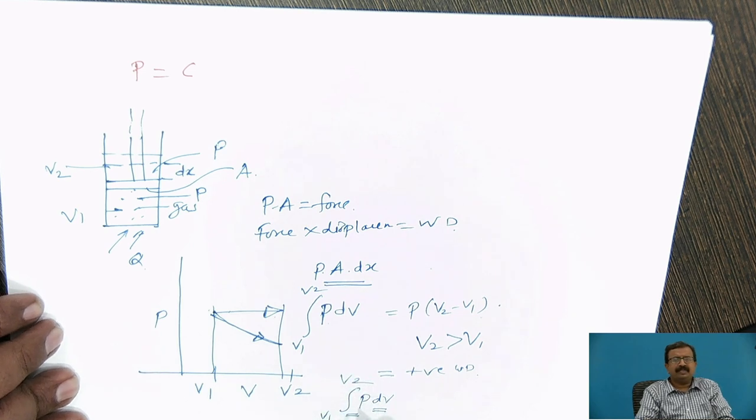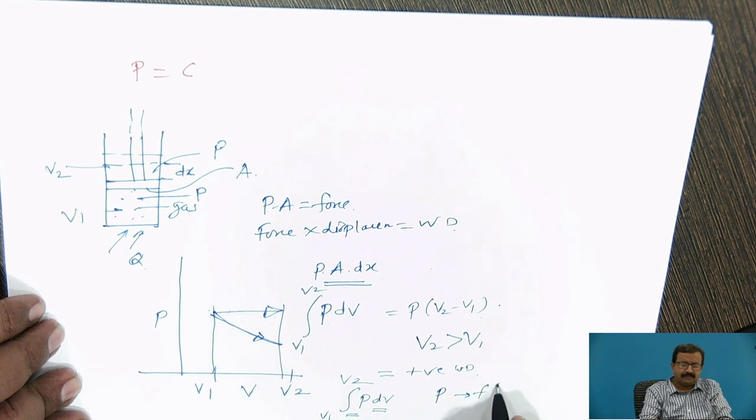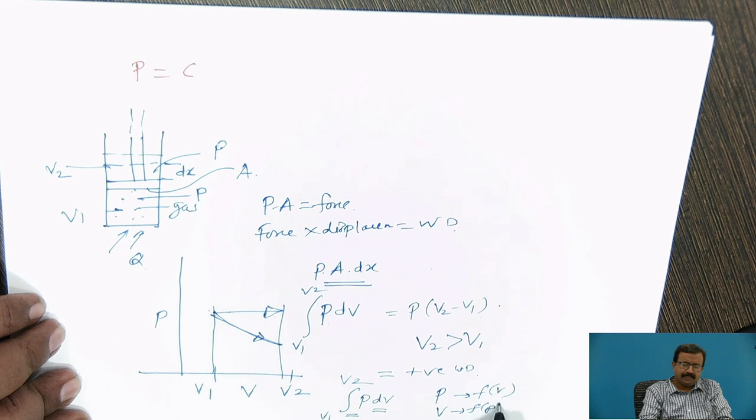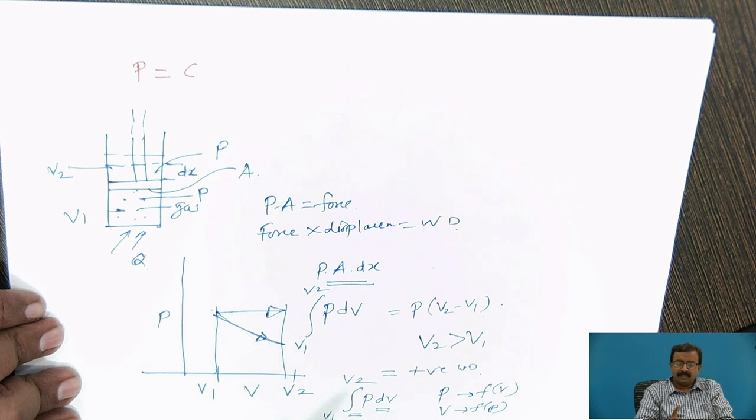From v1 to v2, I want to integrate. So this is a multivariate calculus. Means, I must define p in terms as a function of v, and then integrate it as a function of v. Or I must define v in terms of p, as a function of p, and then integrate in terms of p. Anyway, integral p dv is going to be work done. So one thing is clear to you now.